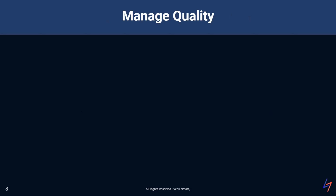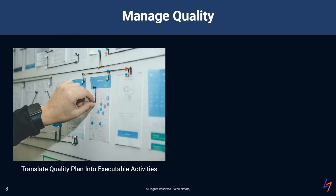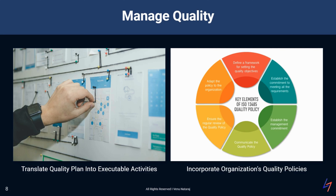Moving on to the manage quality process, this is where we put our quality plan into action. There are two key aspects: first, we need to translate our quality plan into executable activities on the construction site, which might involve setting up quality control checkpoints, establishing testing procedures, or implementing quality assurance processes. Second, we need to incorporate our organization's quality policies into day-to-day operations, ensuring our project-specific quality activities align with our overall organizational approach. Managing quality is an ongoing process requiring constant attention and involvement of everyone on the project team, from managers to subcontractors.